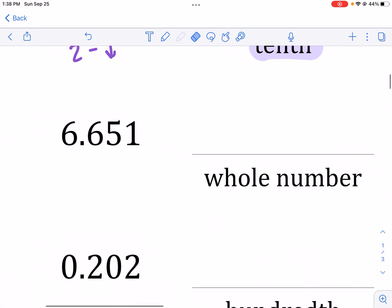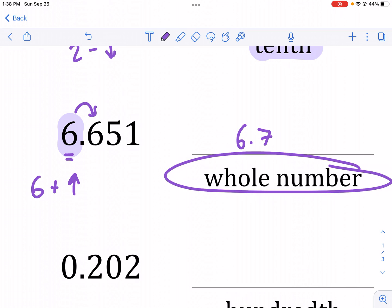Whole number. Let's take a look at this one. There's the whole number place. One, we're going to look to the right and we see it's a six. Remember, six plus, we're going to round up. Now, a common mistake I see is, oh, this becomes 6.7. No, we're rounding to the whole number place. We shouldn't be writing decimals after 6.7.